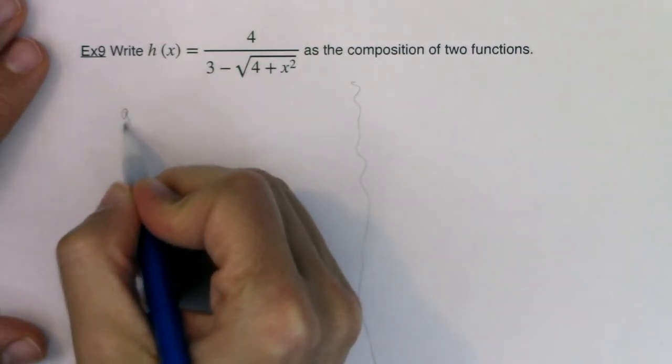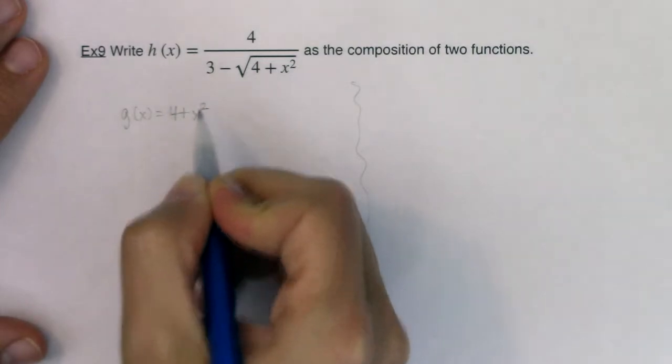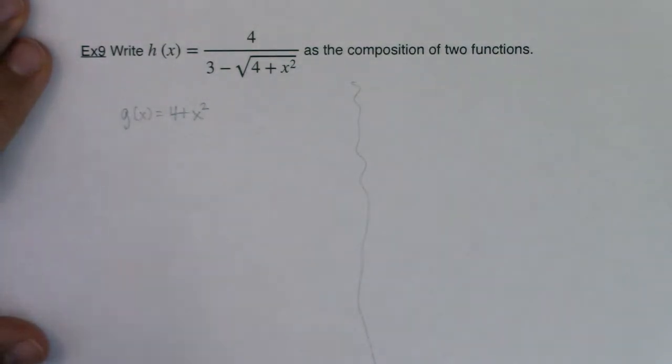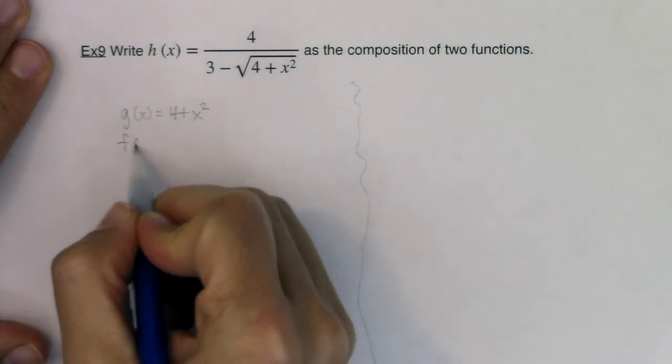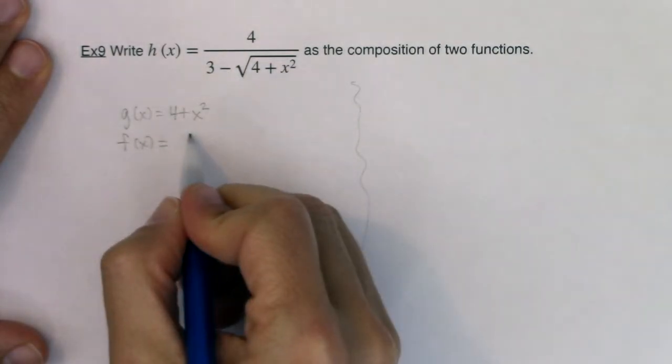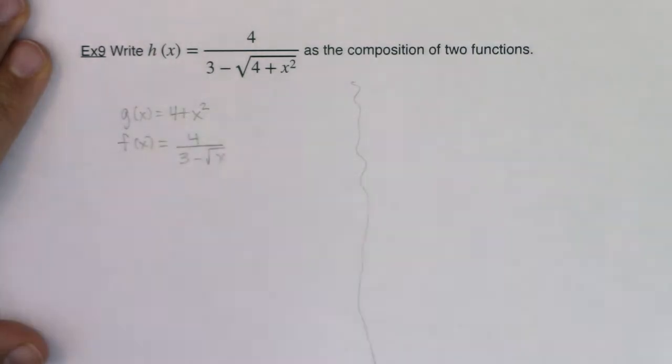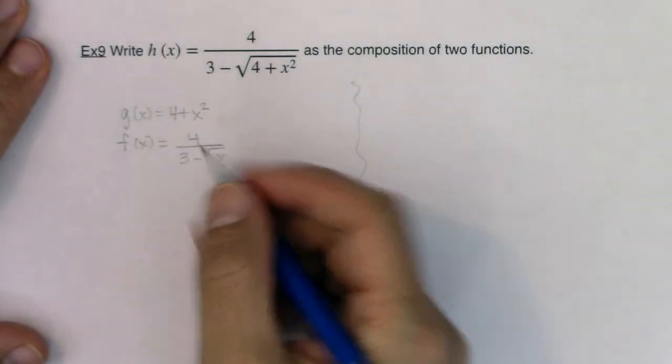So maybe in this case, I'm going to let g of x equal 4 plus x squared. And if I did that, then I could let f of x equal 4 over 3 minus the square root of x. Excuse me, 3 minus the square root of x. I misstated that. And let's check if that would work out.